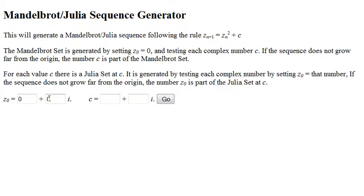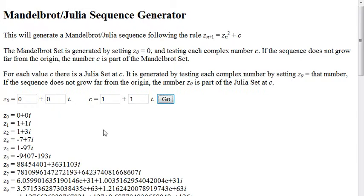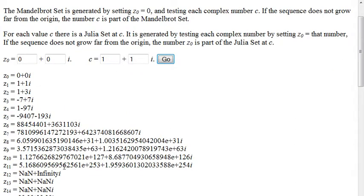So my initial value for the Mandelbrot sequence is 0. And let's go ahead and test that 1 plus 1i point again. And this is going to compute a sequence of values. So you'll notice that these first few values match the ones that we calculated. And then if we continue on, these numbers are quickly getting really, really big.